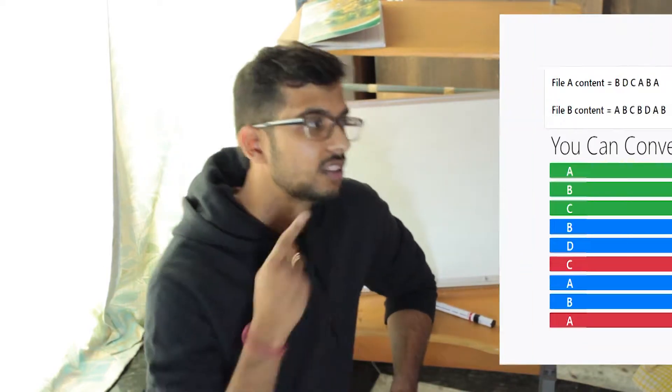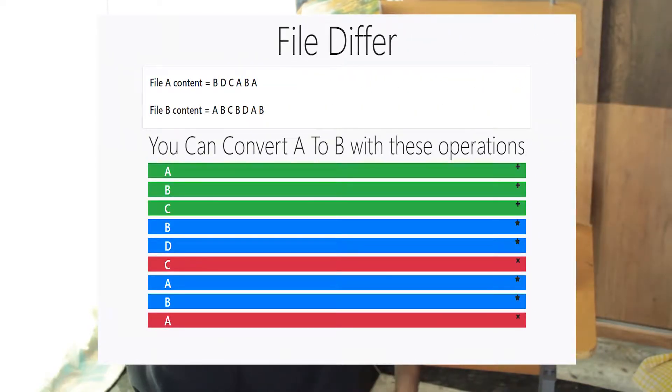Before we dive into the video, this is the final application we are going to build. This is a two-part video series where the first video — this one — covers the brains behind the application, that is the algorithm itself. We will also be looking at another concept called Shortest Edit Sequence. In the second part, we will integrate this algorithm with a Python script to create an HTML markup page. Let's get started.